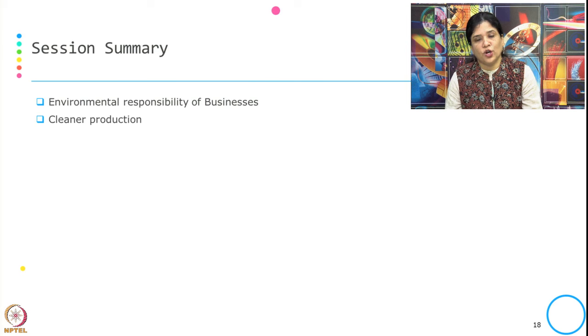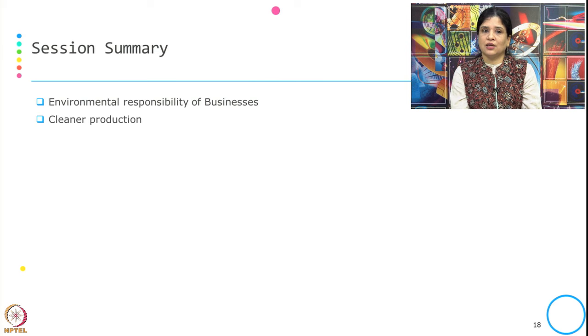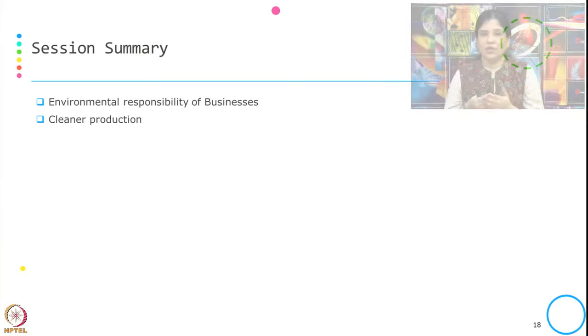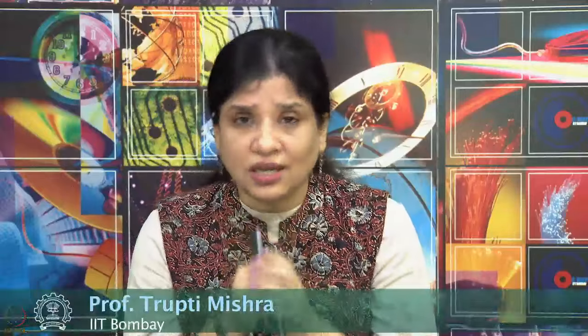In this session, we have tried to understand the environmental responsibility of businesses and how they incorporate it into day-to-day business through three types of tools: tools associated with impact assessment, tools associated with management, and tools associated with reporting. We have also learned what the cleaner production process is, how it differs from the end-of-pipe approach, and what the different cleaner production options available to firms are. Thank you.